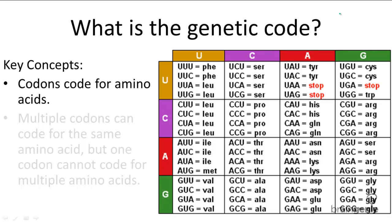Here's an example. If you had the codon AUG, you read row header A, column header U, and then find AUG within this box. So AUG codes for the amino acid methionine, and this is actually our well-known start codon.